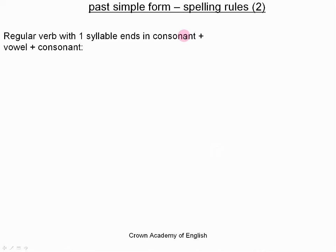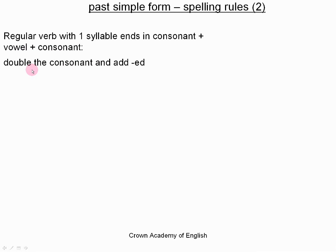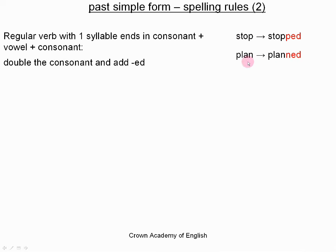For a regular verb which has one syllable and ends in a consonant, a vowel, and then another consonant, we double the consonant and then add ED. So: stop, stopped. Plan, planned. We see here that we double the letter N and then add ED.